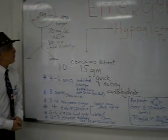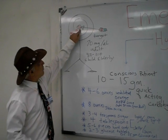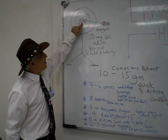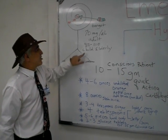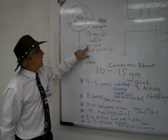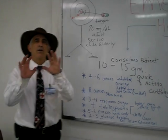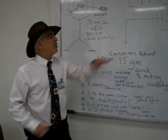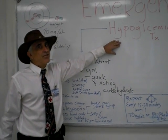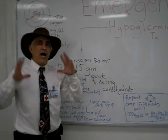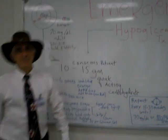Our blood sugar targets: for the adult, 70 milligrams per deciliter; for the child or elderly, 80 to 100 milligrams per deciliter. Managing a hypoglycemic episode can be a very easy thing for you and your patient, as long as you know how to approach the situation. Thank you very much for listening.